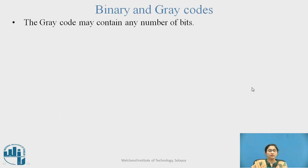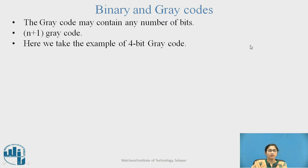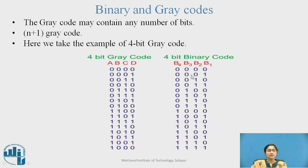Binary and Gray Codes. The gray code may contain any number of bits. Gray code is represented as an n+1 gray code sequence. Here, the example of 4-bit gray code is compared with the 4-bit binary code. From 0 to 7, the MSB of the gray code is all 0; from 8 to 15, the MSB is 1. The last three bits for the 0th combination are 0, 0, 0.